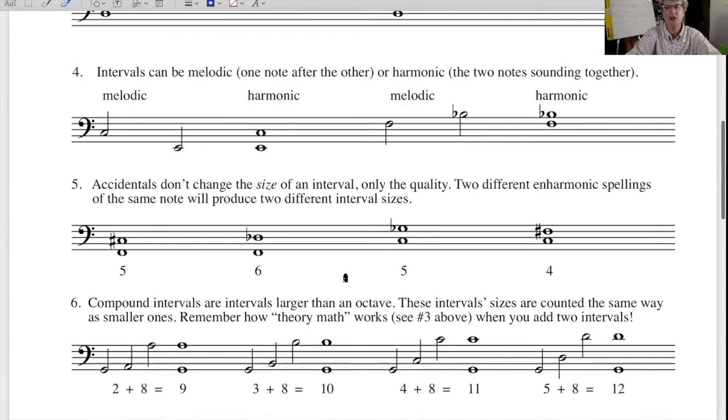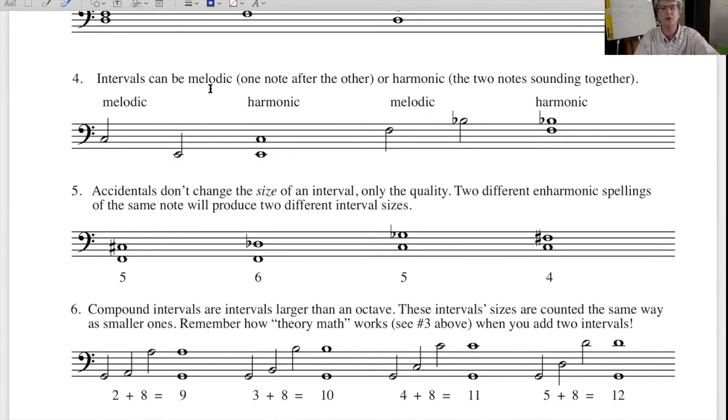A little bit of additional terminology. Intervals can be melodic intervals where the notes are successive. One note follows the other. Or they can be harmonic intervals, the two notes sounding together. So here's an example of a melodic sixth, which is descending. The same two notes written as a harmonic interval. This is a melodic interval, a melodic fourth ascending. This is a harmonic fourth.